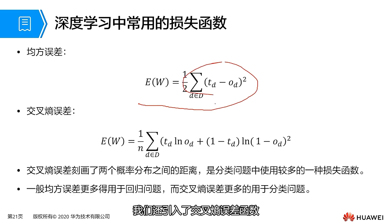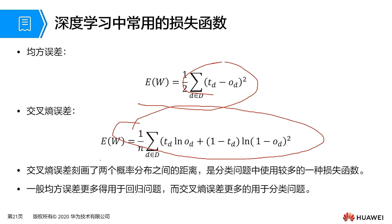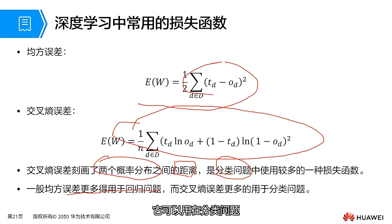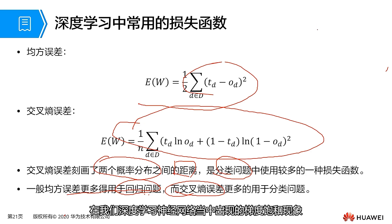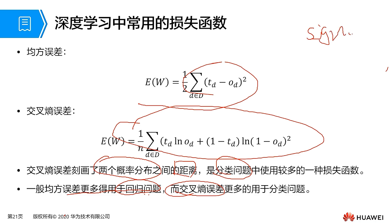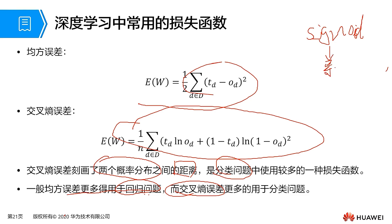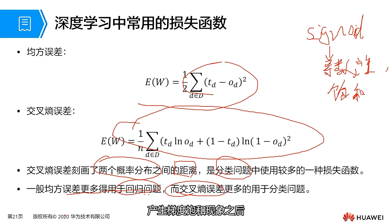In deep learning, in addition to the mean square error function, we also use the cross entropy error function, which describes the distance between two probability distributions and is commonly used in classification problems. While mean squared error can be used in both classification and regression problems, it has a drawback: the phenomenon of gradient saturation that occurs in deep learning neural networks. For example, using a sigmoid function can easily lead to gradient saturation, causing the gradient descent algorithm to become very slow and parameter updates to be exceptionally slow.